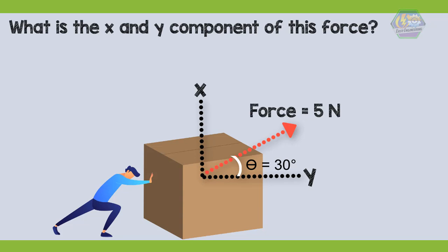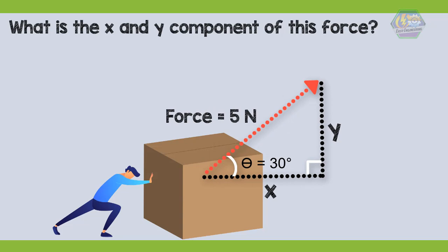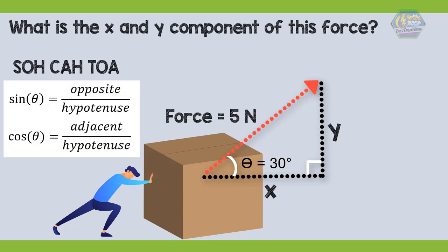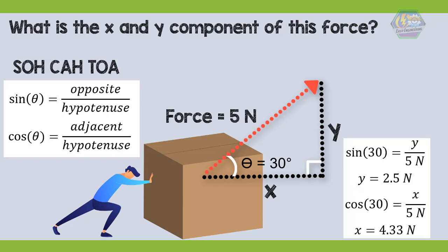Let's view this force as a right triangle. We just need to get the value of X and Y, which will be the X component and Y component of the 5 Newton force. To get the values, we use SOH-CAH-TOA — specifically sine and cosine of 30 degrees to get Y and X respectively. Plugging in the known values, we have the X component equal to 4.33 Newton and the Y component equal to 2.5 Newton.